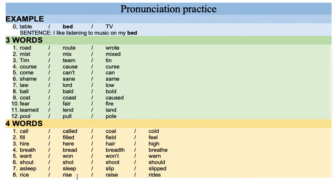So now I'm going to select one of the four different options — please choose them as I say them. Let's start. Number one: cold. Two: feel. Three: hair. Four: bread. Five: wand. Six: should. Seven: asleep. Eight: rise.